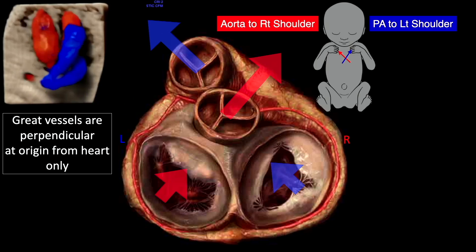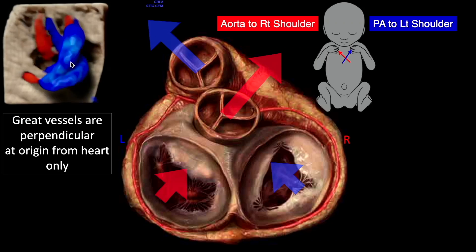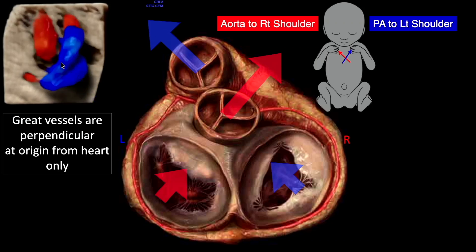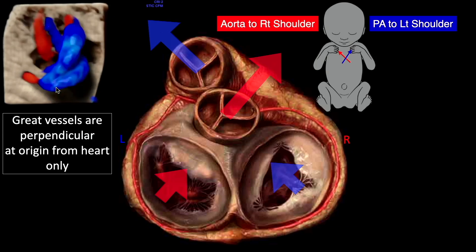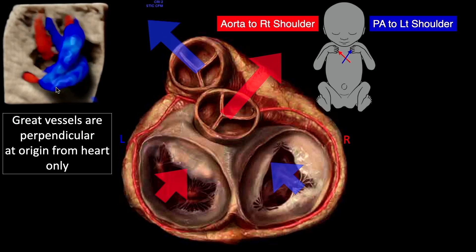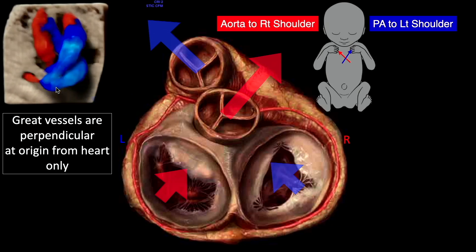When you look at a higher level — at the three vessel trachea view — you see that they are actually parallel to each other. So the concept of the great vessels being perpendicular applies only when they come out of their respective chambers.